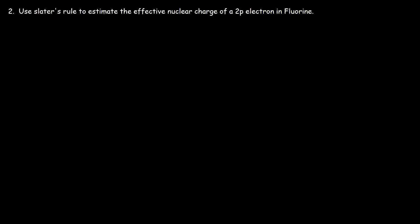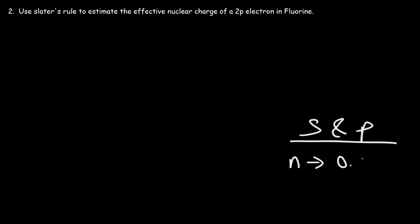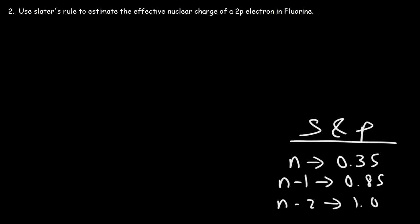Now let's try another example. Use Slater's rule to estimate the effective nuclear charge of a 2p electron in fluorine. Just to review: when calculating the effective nuclear charge for s and p electrons, if you're dealing with electrons in the same group give it a value of 0.35; if it's one group lower, 0.85; if it's two or more groups lower, give it a value of 1. The electron configuration of fluorine is 1s2, 2s2, 2p5.